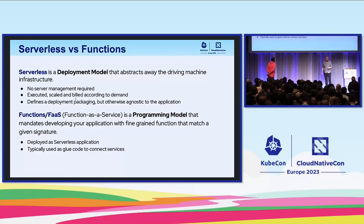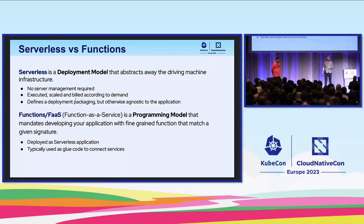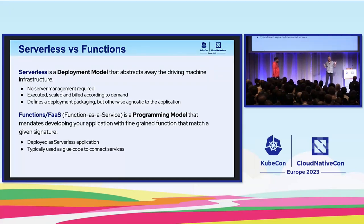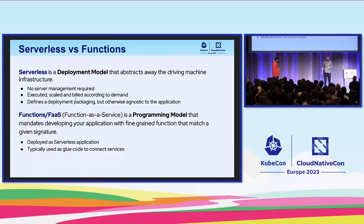Functions, on the other hand, are more like a programming model — they have a certain function signature you need to match to actually deploy the function. Once you build this function, you can deploy it as a serverless workload. So serverless can take basically any container and deploy it, but functions is more like a glue — a strict thing to follow and usually smaller services.